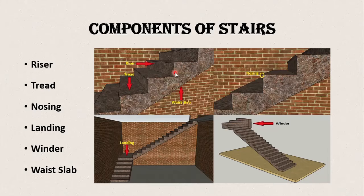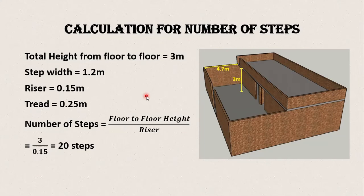of 0.15 meter, and the tread is 0.25 meter. The formula is the floor to floor height divided by the riser - that is 3 meter height divided by riser 0.15 meter - so we have 20 steps for our stairs.